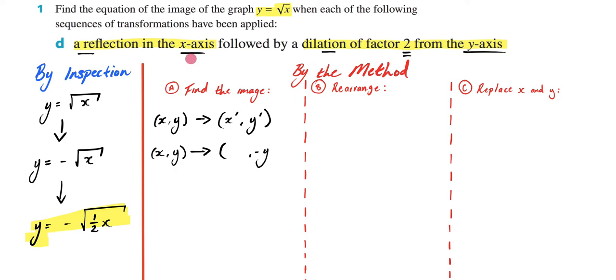And we're also going to do a dilation of a factor of 2 from the y-axis. So that means I'm going to be basically doubling all my x values. So it's going to be 2x. I'm taking all my x's and timesing them by 2.